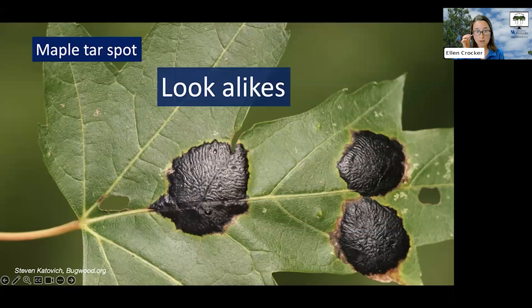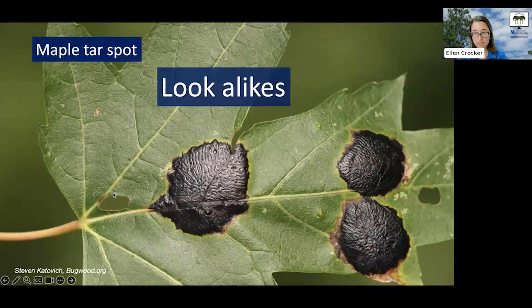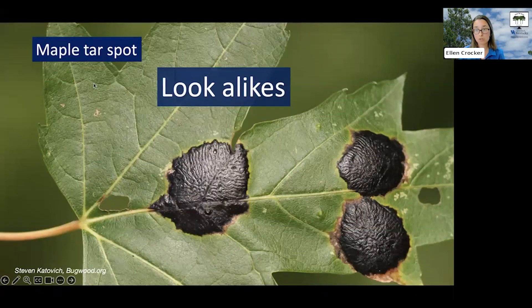Another lookalike is maple tar spot, which is another fungal disease promoted by wet weather. With maple tar spot, you'll see black spots on the surface of the leaves — it looks like someone has spotted tar on there, with raised black spots. But typically this happens later in the summer, even into the early fall. Good news: this is not a health issue for your trees. Maple tar spot is a totally normal annual occurrence. Usually it's not too bad — some years you'll get more of it, but it's not going to hurt the health of your trees.